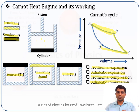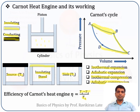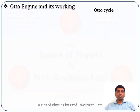A detailed discussion of the Carnot cycle is available in a previous lecture in our heat and thermodynamics playlist. The efficiency of the Carnot cycle is given by eta equals T1 minus T2 divided by T1, where T1 is the temperature of the source and T2 is the temperature of the sink.